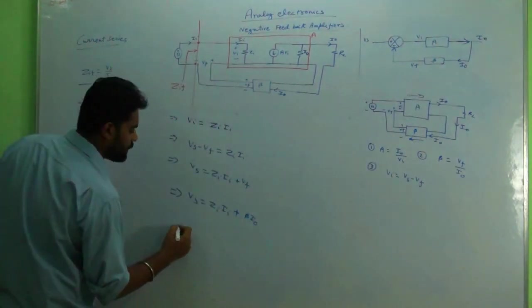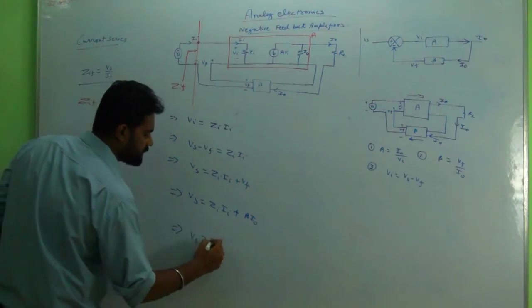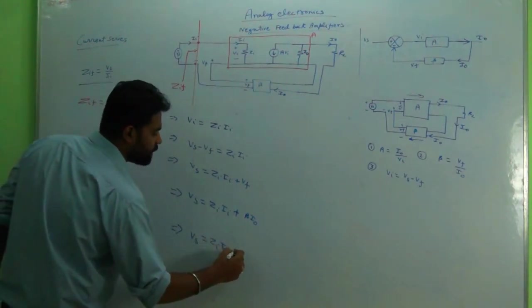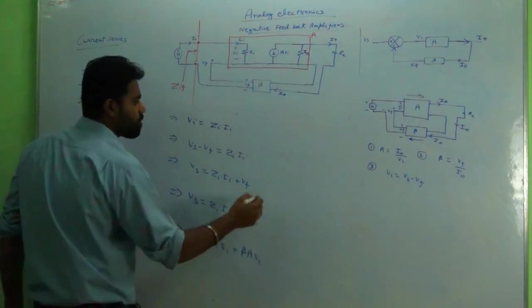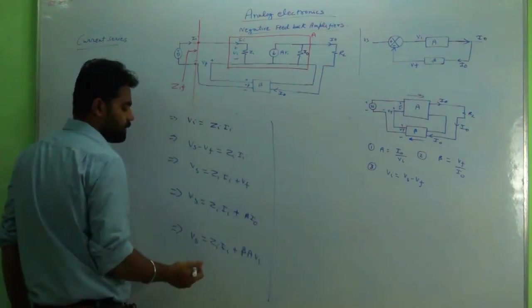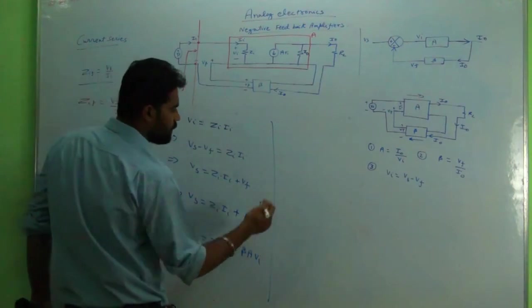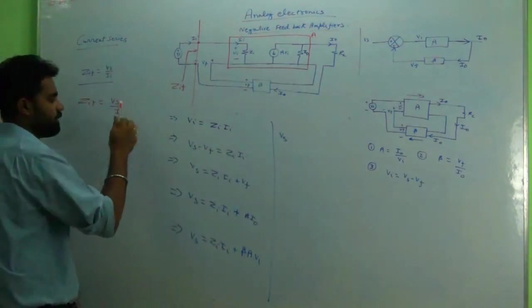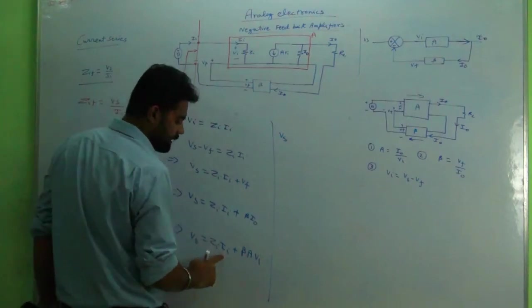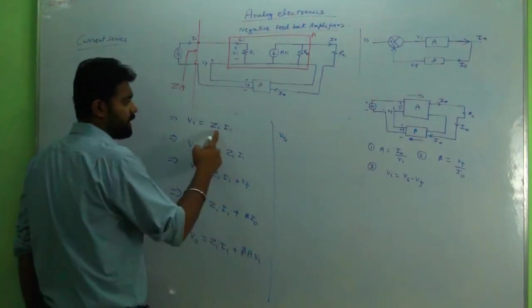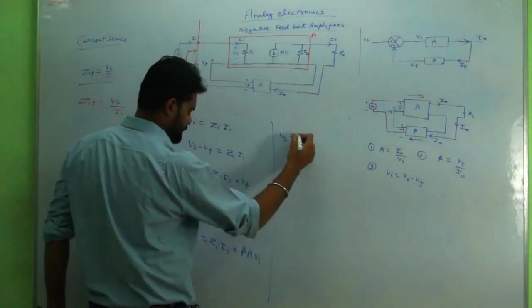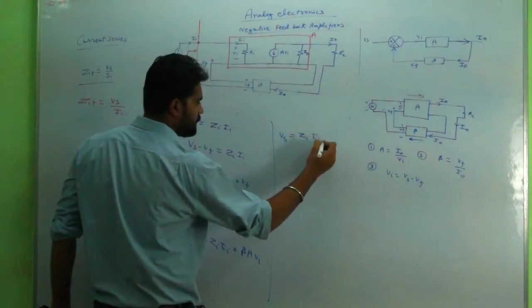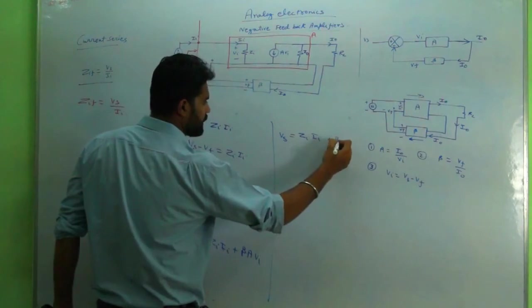Beta into i0, and i0 can be replaced by a into vi. I'll write it here: zi ii plus vf, and vi is zi into ii, so I will write zi ii plus vf into vi, and vi I will replace it by zi ii.